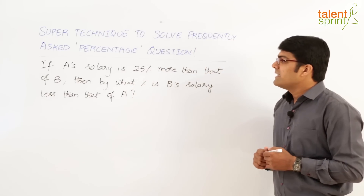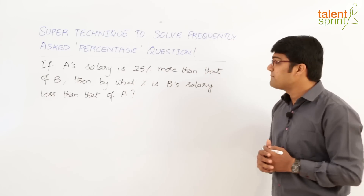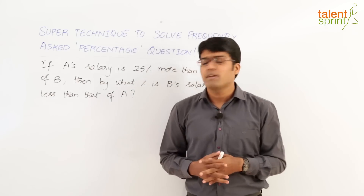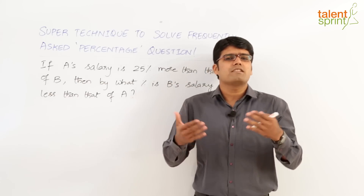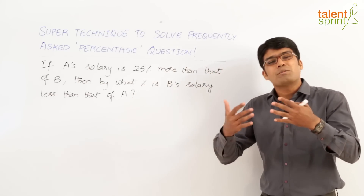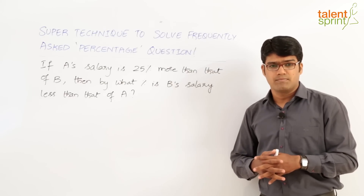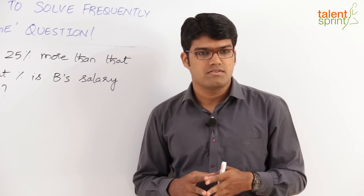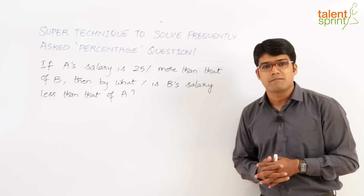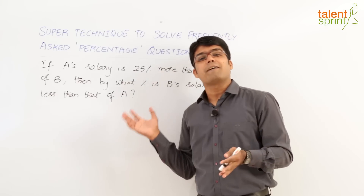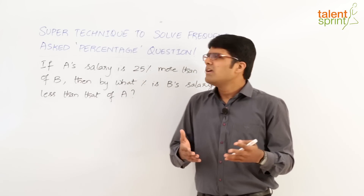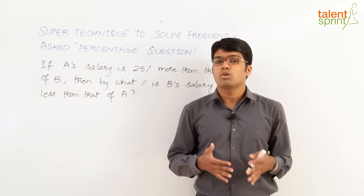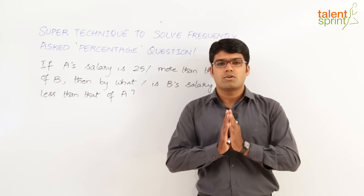Let us look at the question first. If A's salary is 25 percent more than that of B, then by what percentage is B's salary less than that of A? Now, one of the answer options would definitely be 25 percent — in fact the first option itself would be 25 percent — because most students feel that since A is 25 percent more than B, obviously B is 25 percent less than A. Well, that is not the case. 25 percent is the wrong answer.